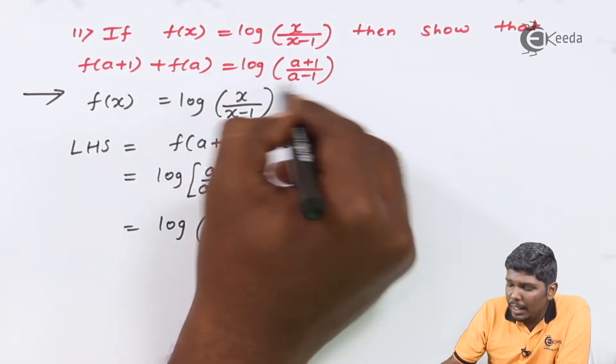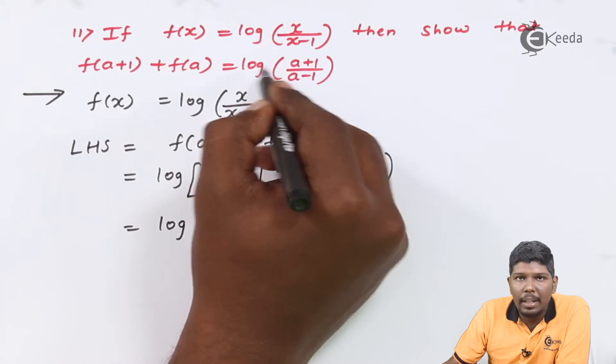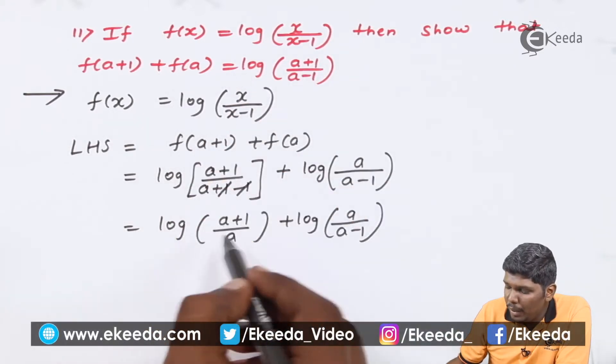If you consider the RHS, we know that there is only a single log term in the RHS. And right now, we have two log terms.